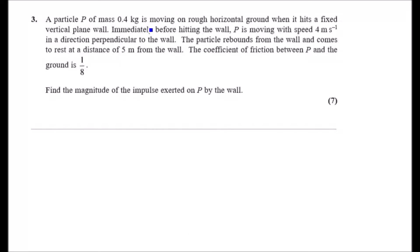A particle P of mass 0.4 kg is moving on a rough horizontal ground when it hits a fixed vertical plane wall. So it sounds like collision. Before we do this, let's go ahead and draw what we know from the first sentence. We've got particle P has a mass of 0.4 times G and, of course, a natural reaction going upwards R. We also know that it's moving along a rough horizontal ground, so this means there's going to be some frictional force to the left. I'm going to assume that the direction of motion is to the right here.